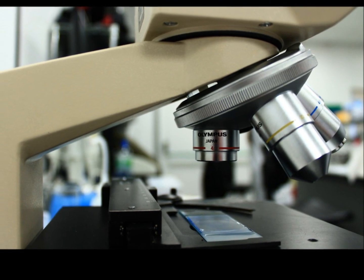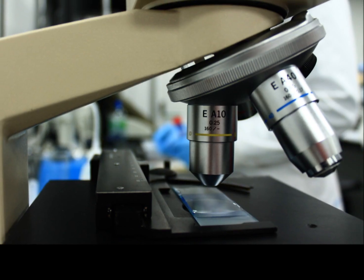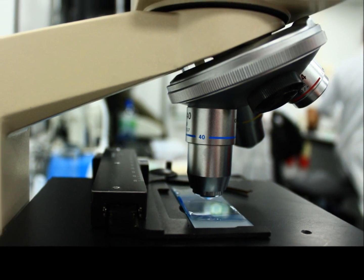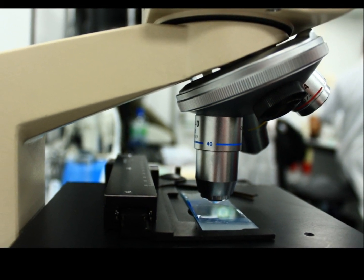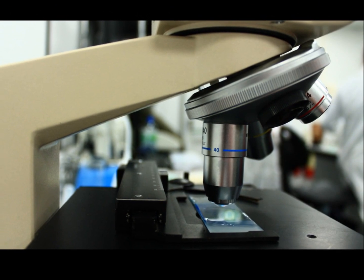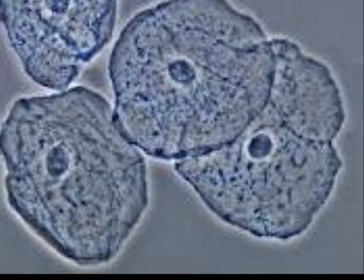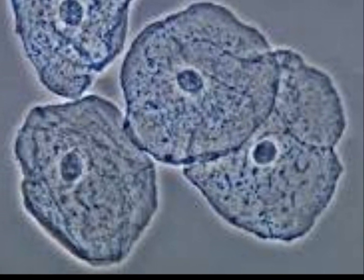First examine your animal cell using the lowest power lens and gradually increase to the higher magnifications. Bring the lens down just above the slide. Use the coarse adjustment knob to focus the image. Hopefully you will see an image similar to this.